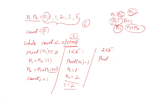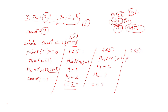Now it will print n1 — n1 is 1. Then it changes: n1 equals n2, so n1 becomes 2, and n2 equals n1 plus n2 — 2 plus 1 equals 3. Count variable is increased by 1 to 3. Is 3 less than 5? Yes, it is true. It will print n1 — n1 is now 2. Then n1 becomes equal to n2, so n1 is 3, and n2 becomes n1 plus n2 — 3 plus 2 equals 5.